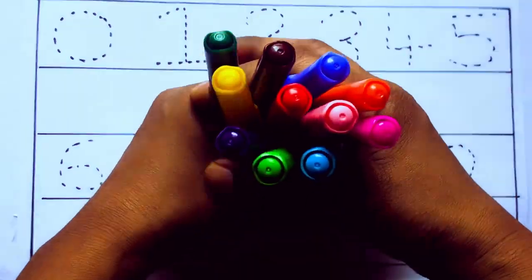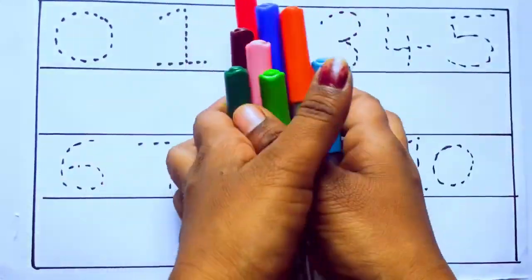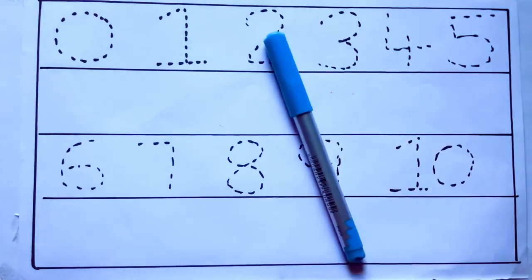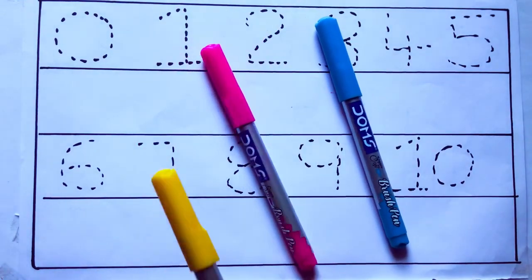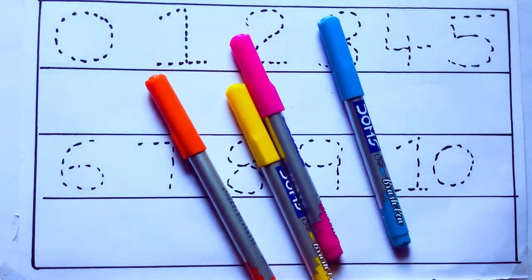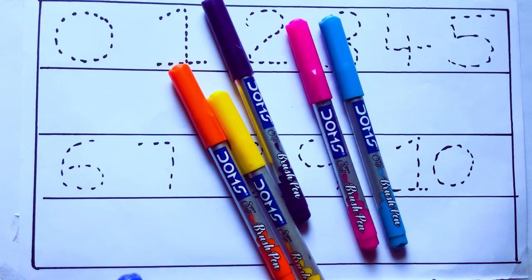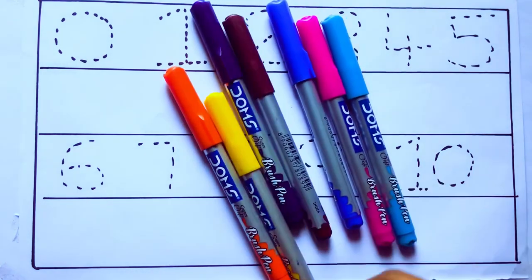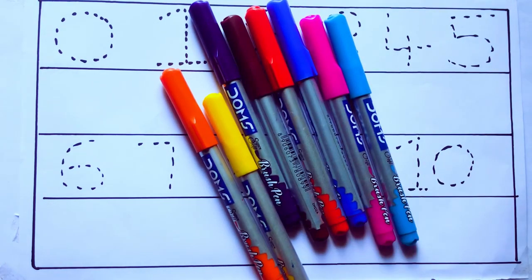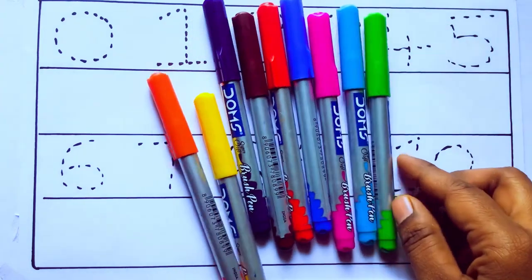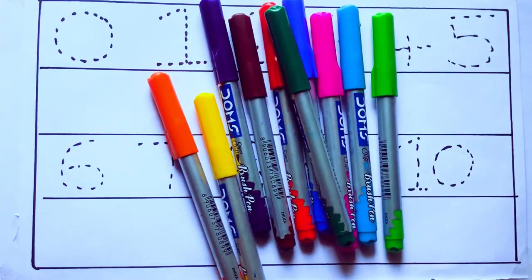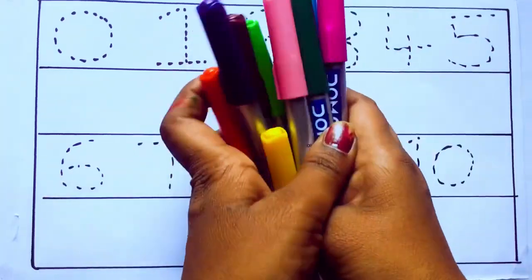Let's learn some colors. These are all the color pencils. Let's learn the names. Sky blue color, pink color, yellow color, orange color, violet color, blue color, brown color, red color, green color, and pink color.